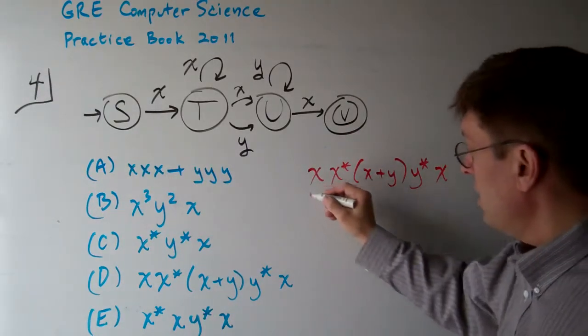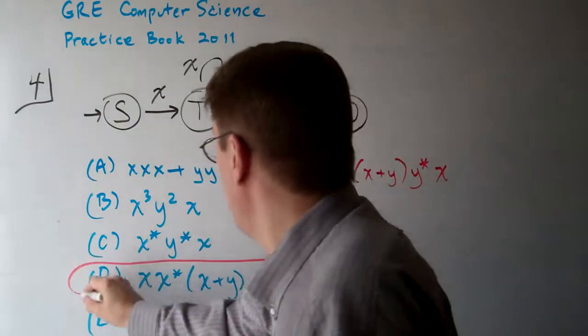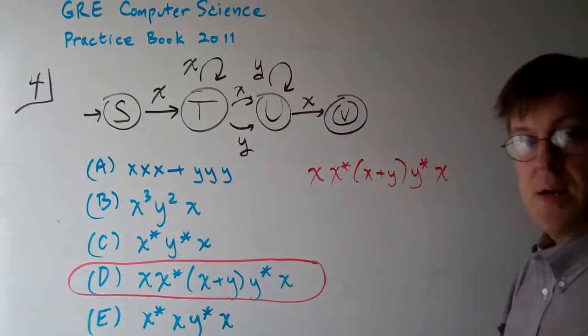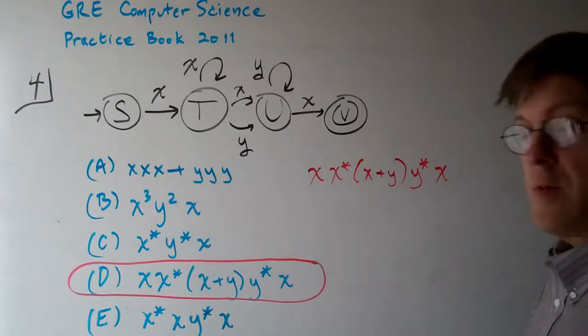So it's really not too complicated. Clearly it's a D. X, X star, parentheses, X plus Y, close parentheses, Y star, X.